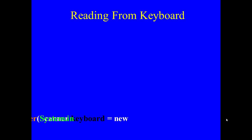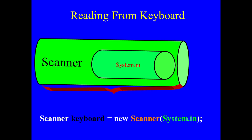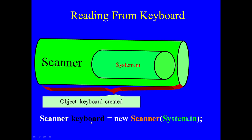Basically, reading from the keyboard — you know how that is done. We create a scanner object, we call it keyboard, and call the scanner class constructor. We pass it System.in, which is the Java representation of your physical keyboard. When System.in is passed, the keyboard object in RAM gets connected to your physical keyboard. System.in is embedded inside the scanner, and that scanner we are calling keyboard.